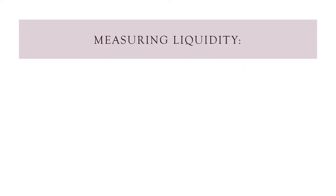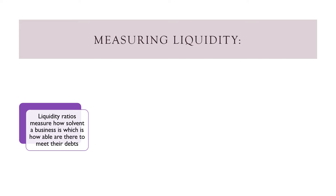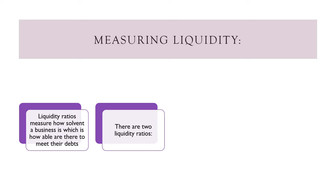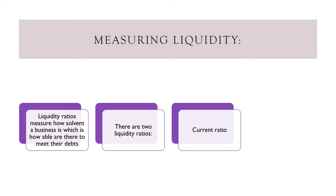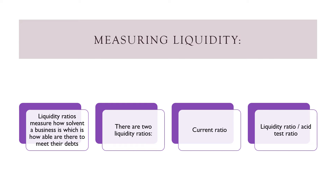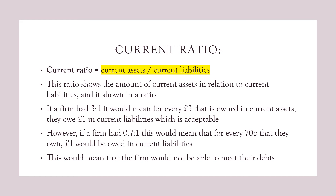Now, looking at measuring liquidity. Liquidity ratios measure how solvent a business is — meaning how able they are to meet their debts. There are two liquidity ratios: the current ratio and the liquidity ratio, also known as the asset test ratio. Current ratio is current assets divided by current liabilities. This ratio shows the amount of current assets there are in relation to the current liabilities and is shown in the form of a ratio.